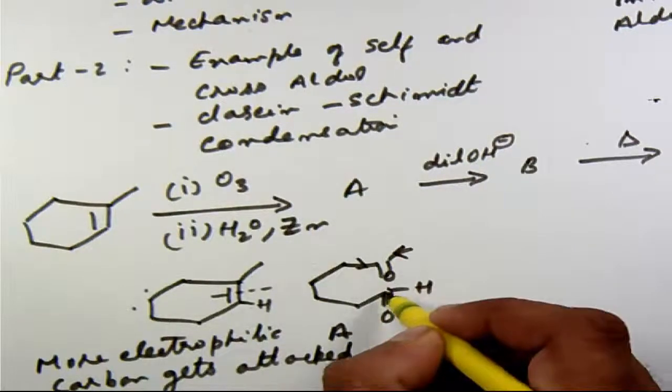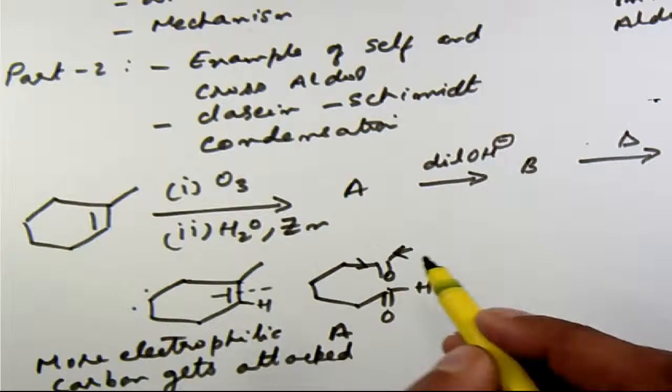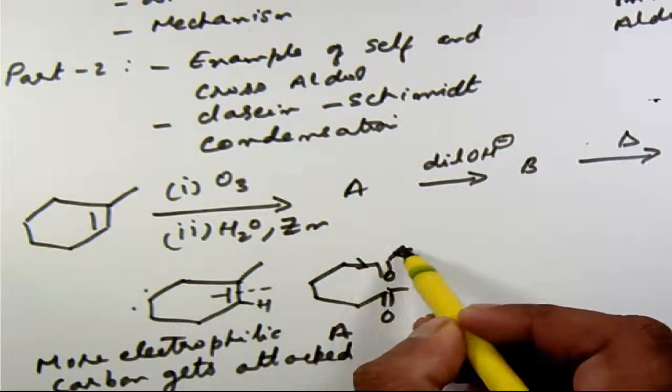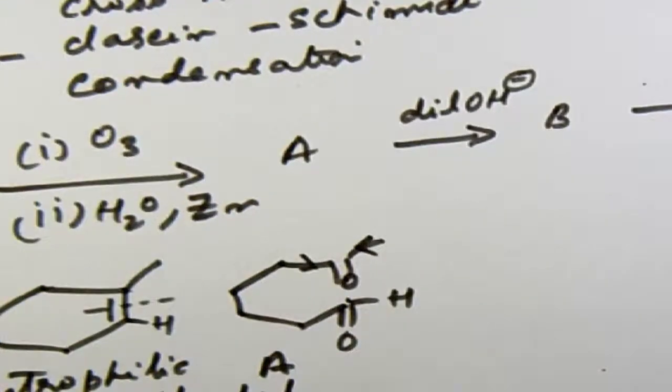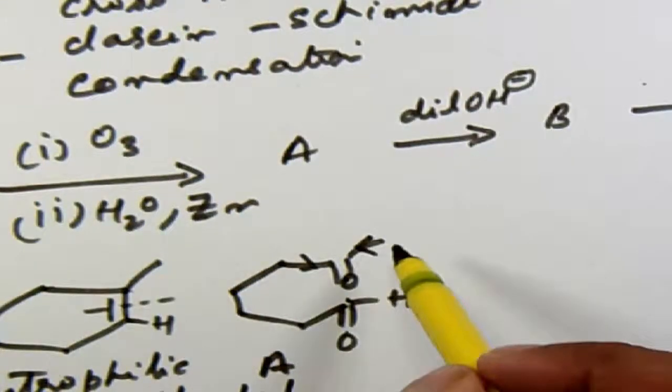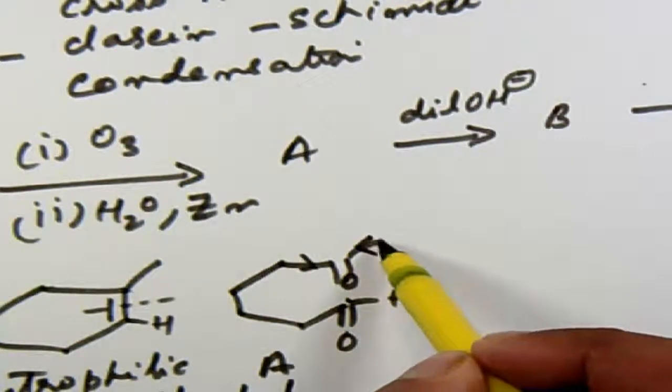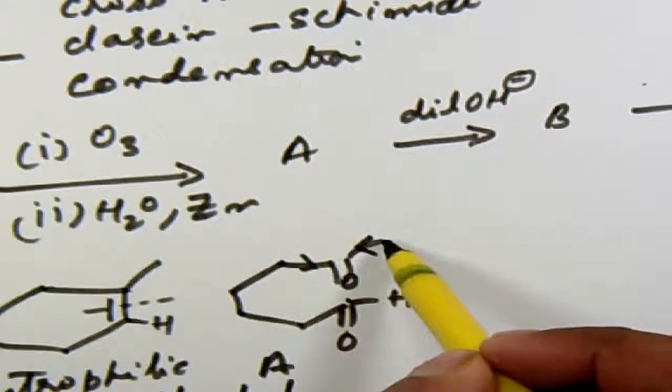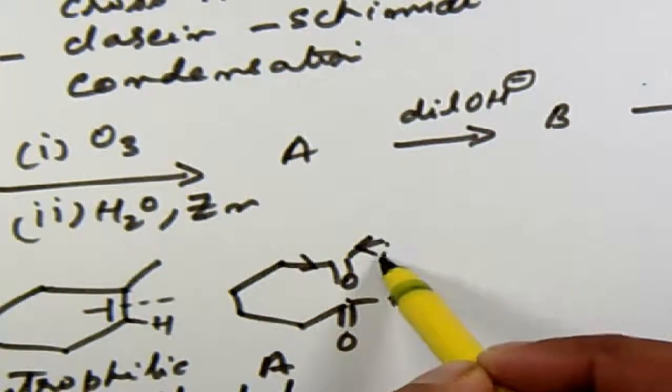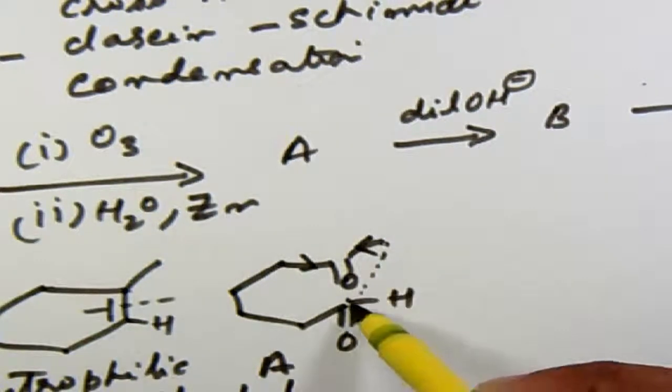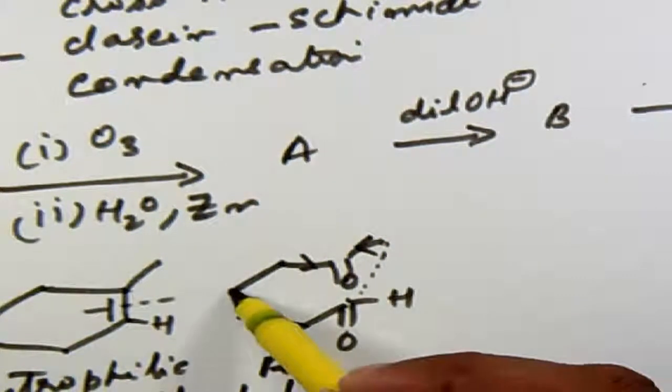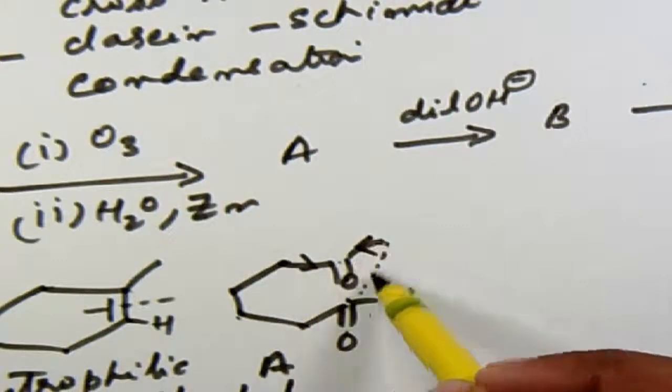So this carbon is going to get attacked. Now the ketone always has remember two alpha carbons and therefore two alpha hydrogens here. So let's see which one it's going to take. If the alpha hydrogen is lost from this methyl carbon then this is going to form a bond with this and that would make it one, two, three, four, five, six, seven membered ring.